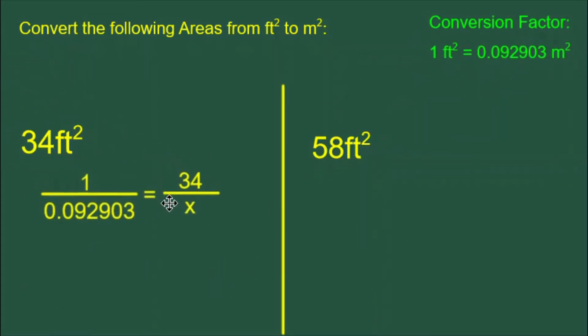We can use the conversion factor to build a proportion. We put the 1 and the 0.092903 together on the left. The feet squared is on top, the meter squared is on the bottom.